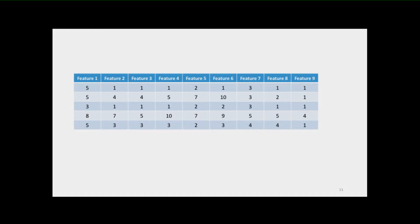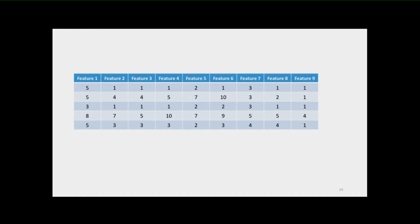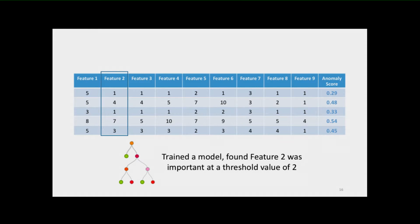To recap — what did we actually do in the big picture? We started with a labeled dataset and found a pattern where feature two — uniformity of cell size — was important at a threshold value of two. We removed the labels and replaced them with anomaly scores. Again, we found the same pattern: feature two was important at a threshold value of two. On the surface these two analyses seem very similar — in both cases we're using a decision tree to get insight into our data, and in both cases the decision tree finds this pattern for this particular feature at this particular value.